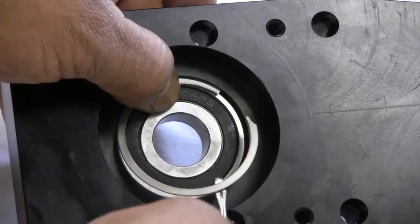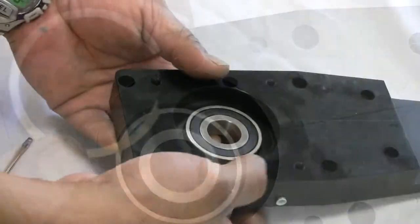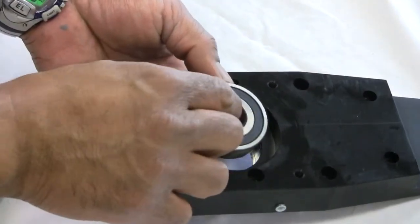We will now replace the bearings in the side plate. Remove the snap ring holding the bearing in place. The bearing now pushes up from the bottom.